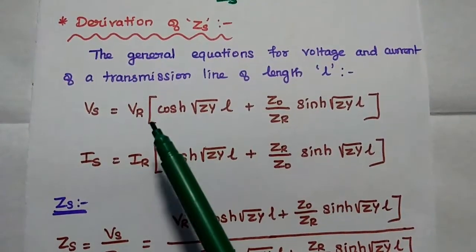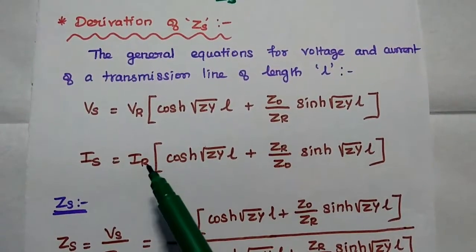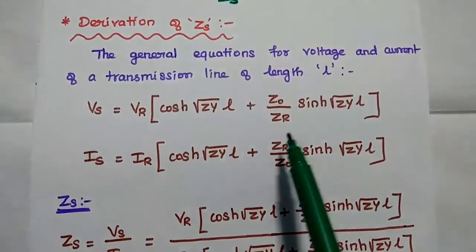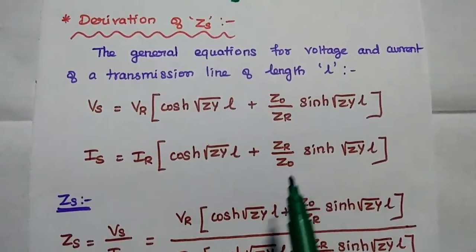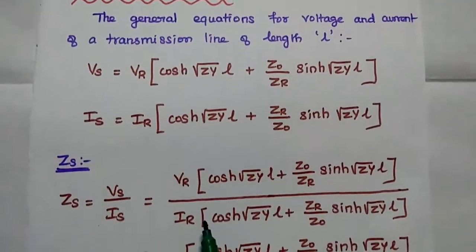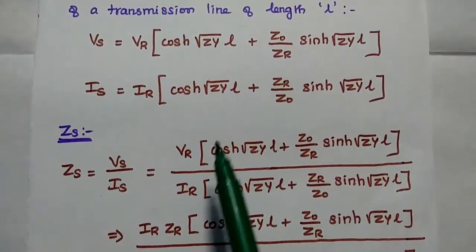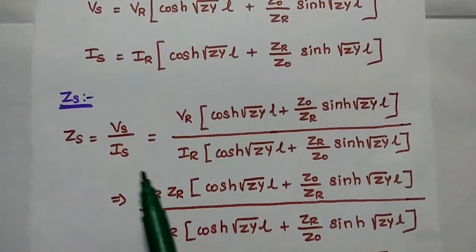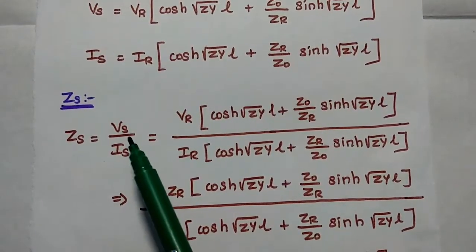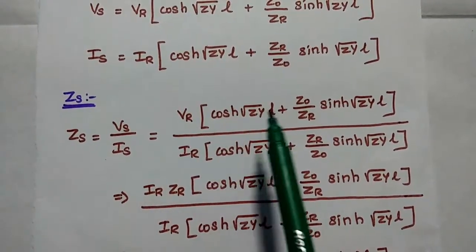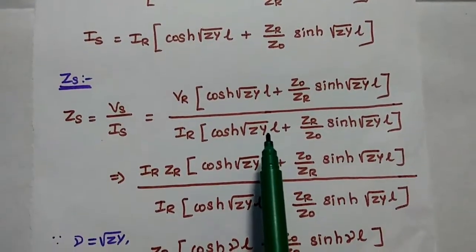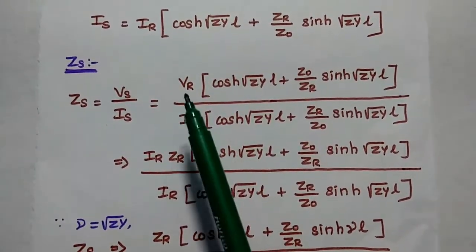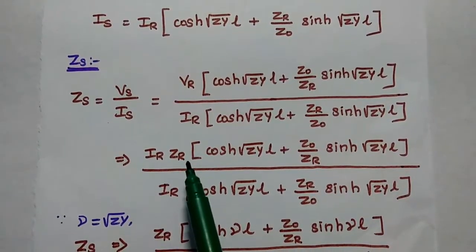Here, Vr is the receiving end voltage, Ir is the receiving end current, Z0 is the characteristic impedance, and Zr is the receiving end impedance. We have to substitute the values of Vs and Is into the Zs formula to get the input impedance Zs equal to Vs divided by Is. According to Ohm's law, Vr can be written as Ir times Zr.